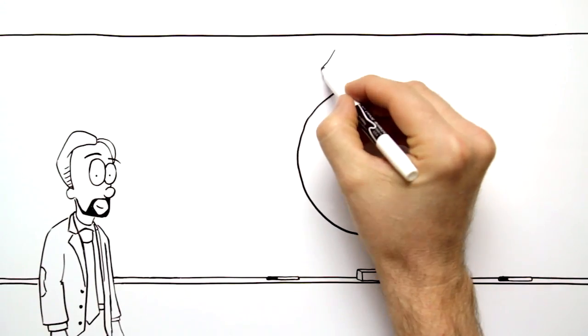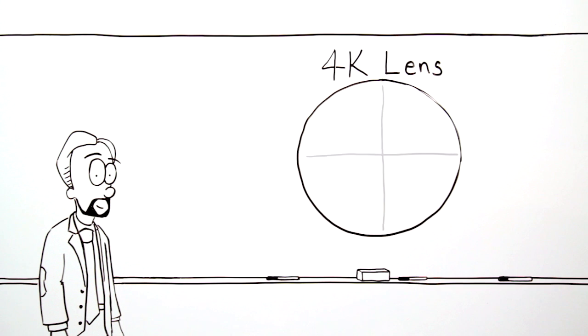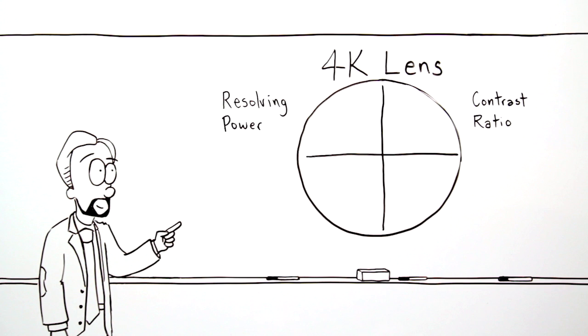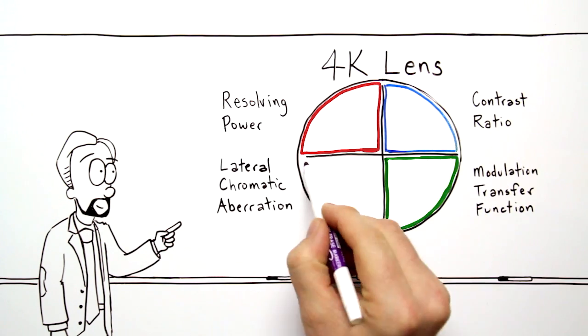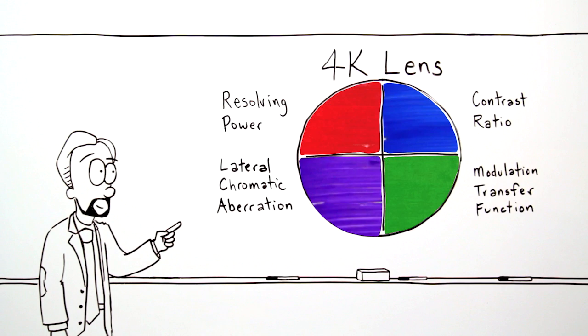Let's focus on four central scientific benchmarks for a 4K lens: resolving power, contrast ratio, modulation transfer function, and lateral chromatic aberration. Optimizing our 4K lenses for each of these factors allows you to create sharp, stunning images.